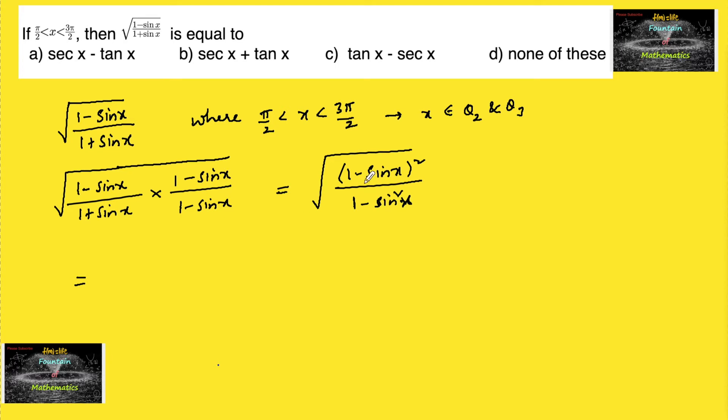So which is equal to root over 1 minus sin x whole square upon root over 1 minus sin square is cos square x.